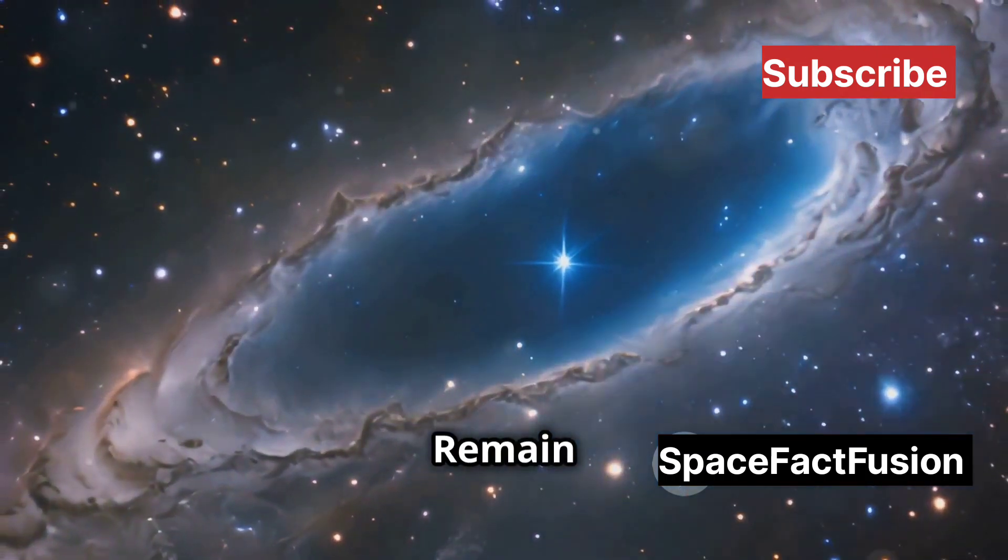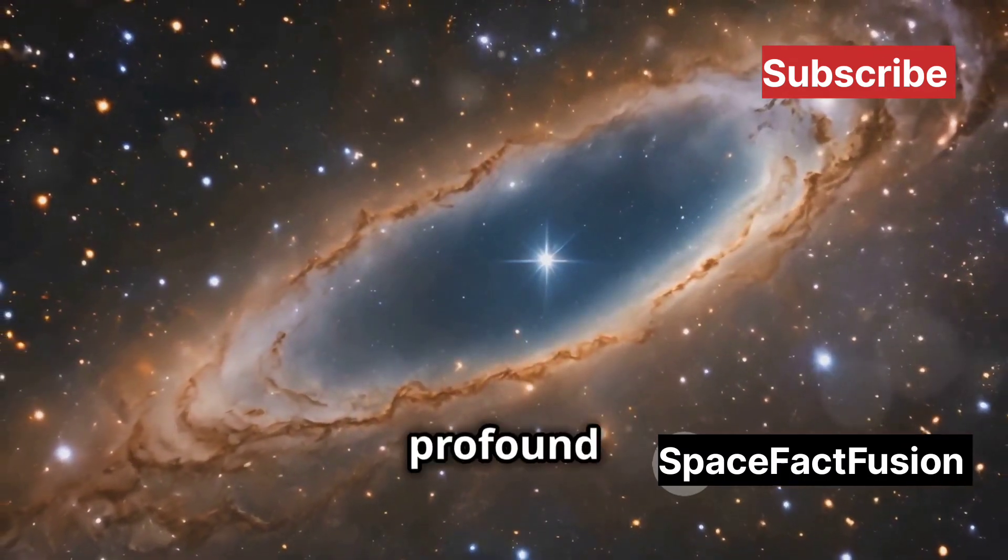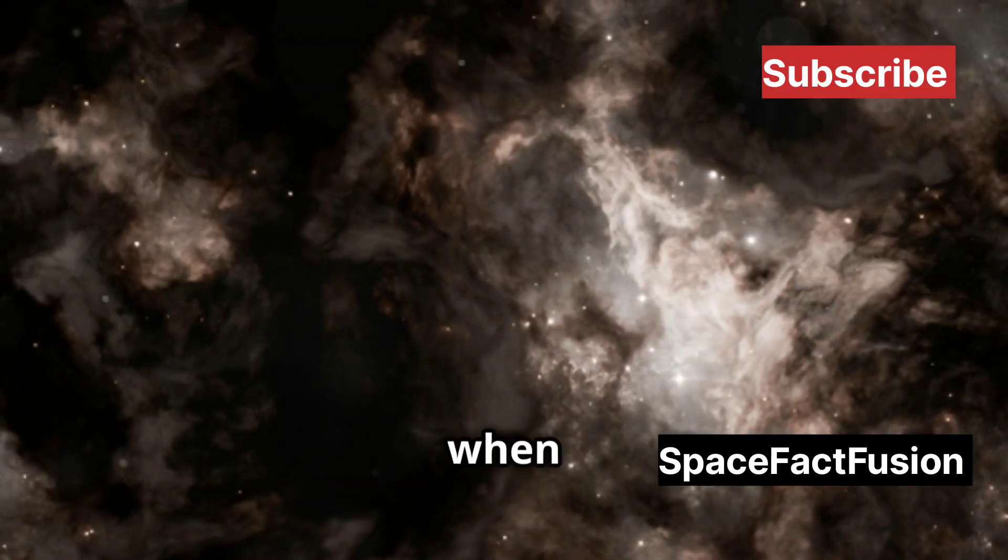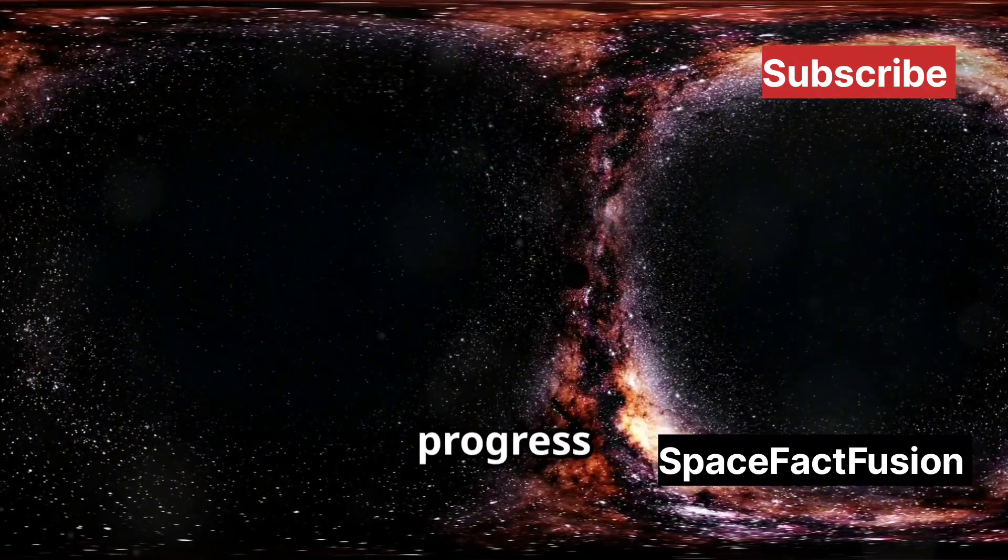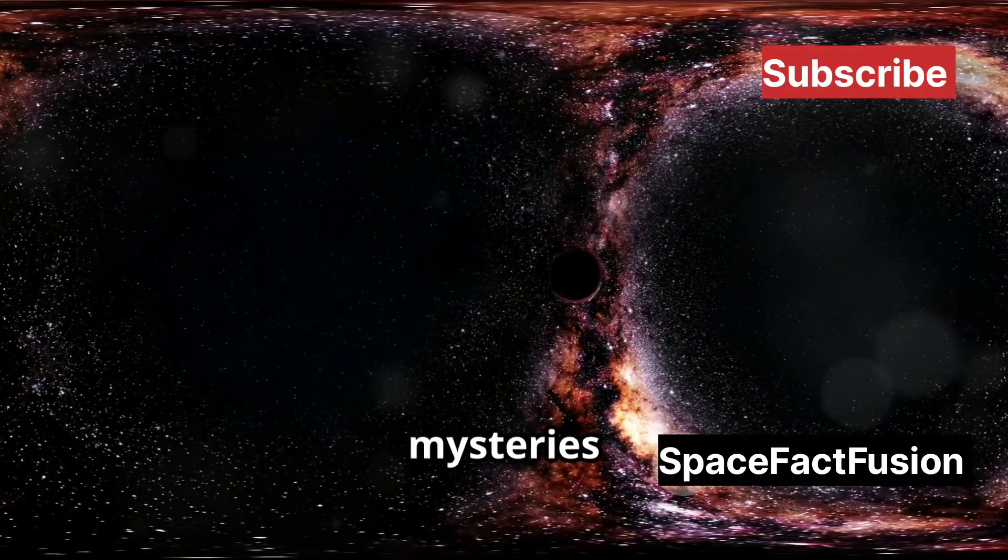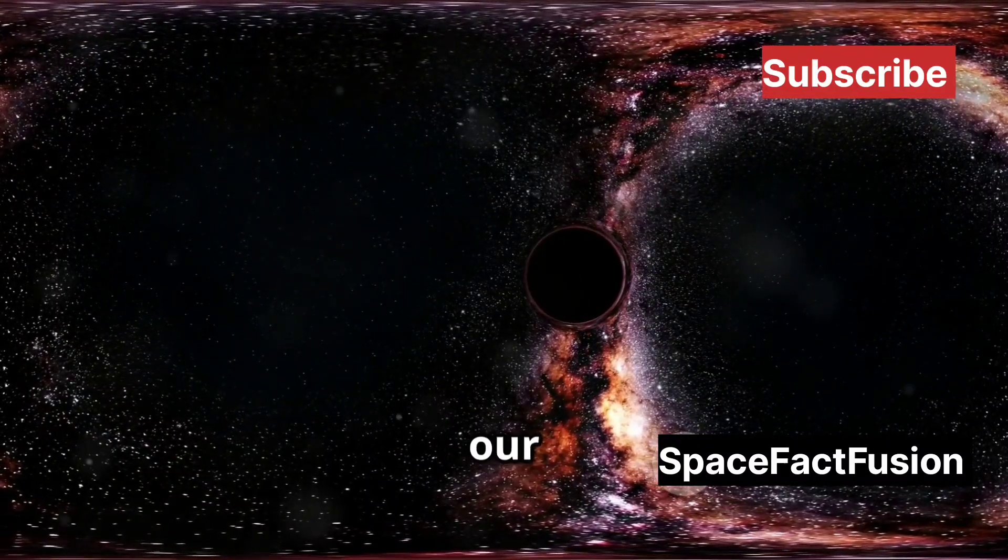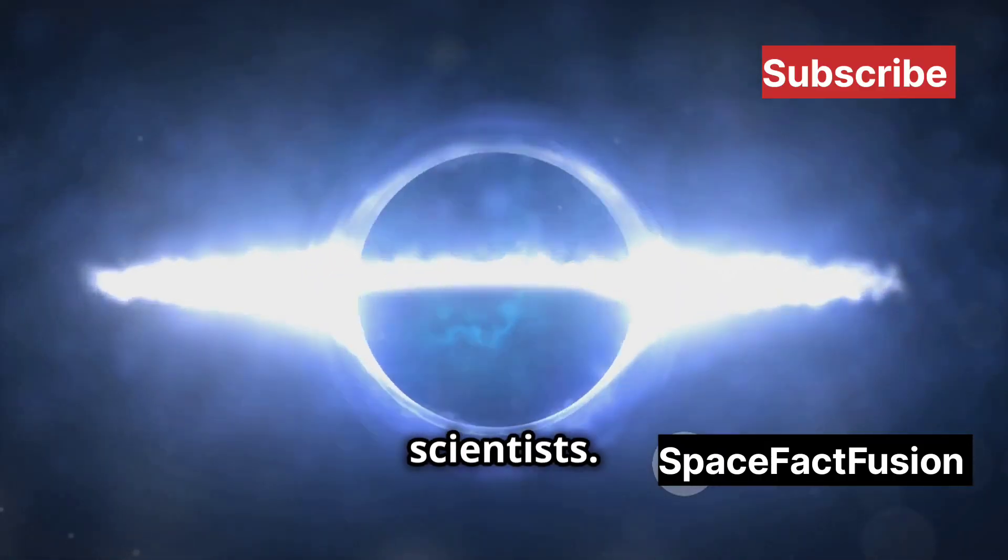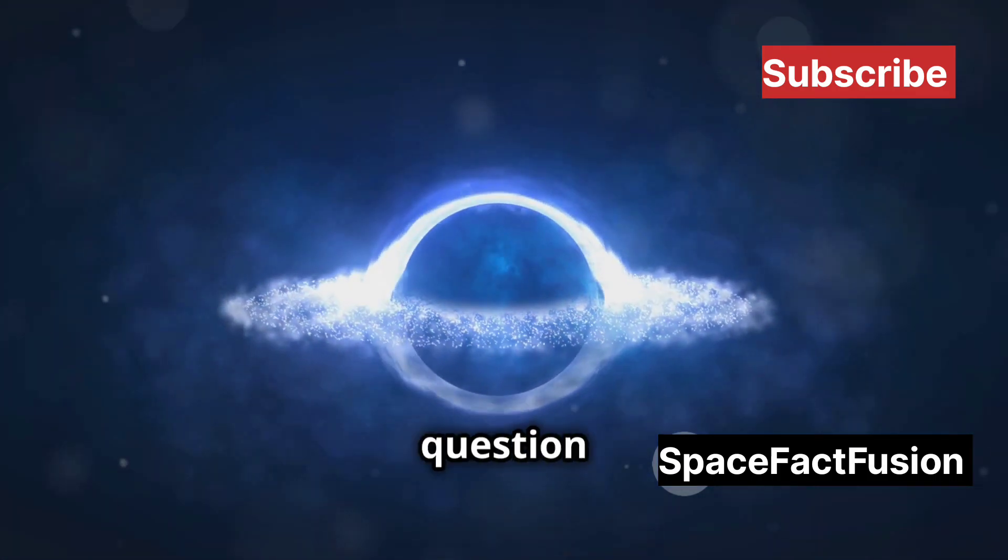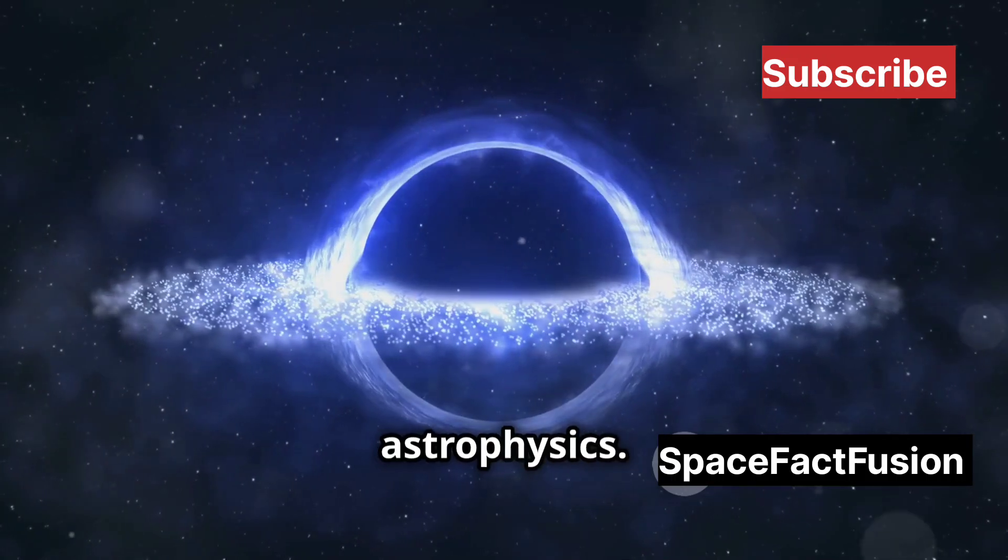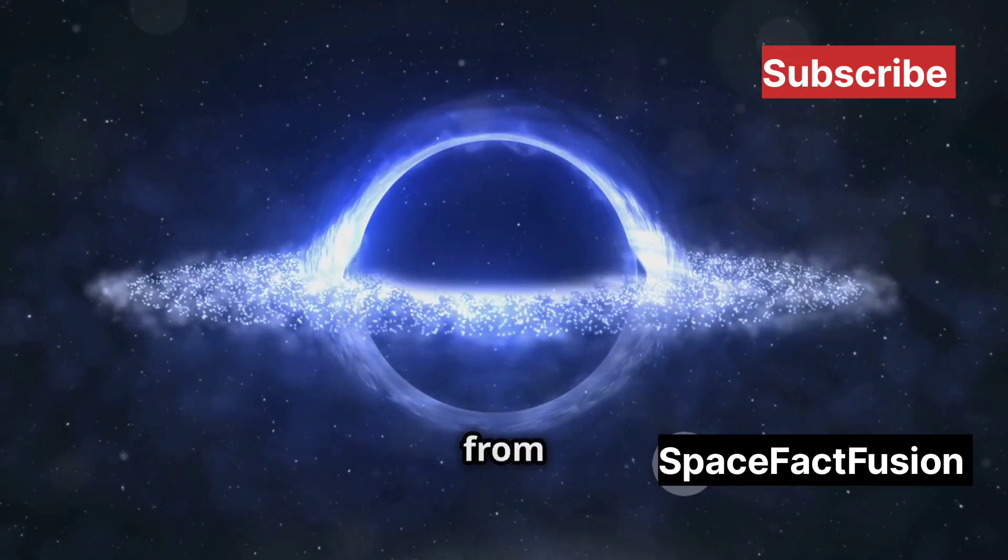The early universe is a realm of profound mysteries and cosmic wonders, a time when the first stars and galaxies began to take shape. While we've made significant progress in understanding supermassive black holes, mysteries remain. These colossal entities, with masses millions to billions of times that of our Sun, continue to baffle scientists. How did the very first supermassive black holes form so early in the universe? This question is at the forefront of modern astrophysics. Were they born from the collapse of massive primordial stars, or did they grow rapidly from smaller black holes?